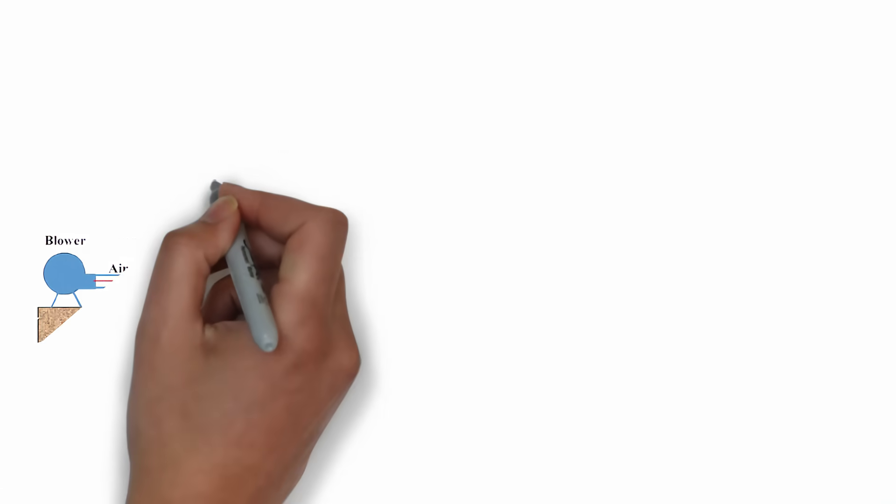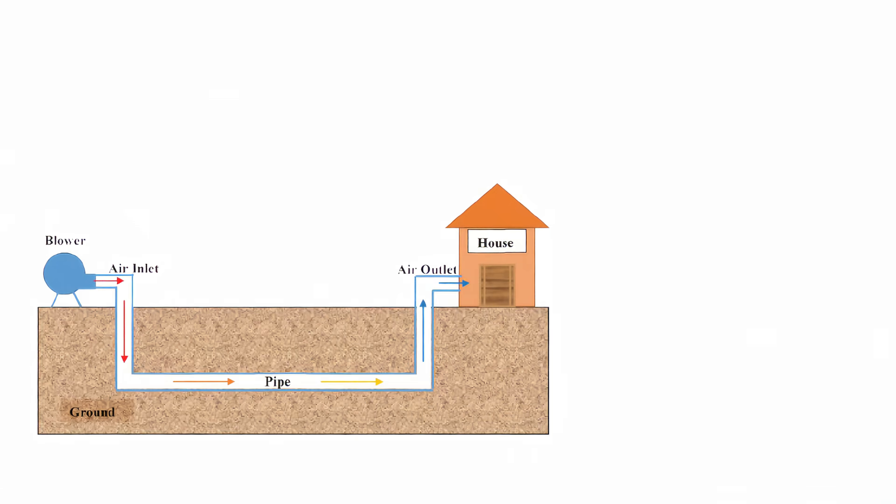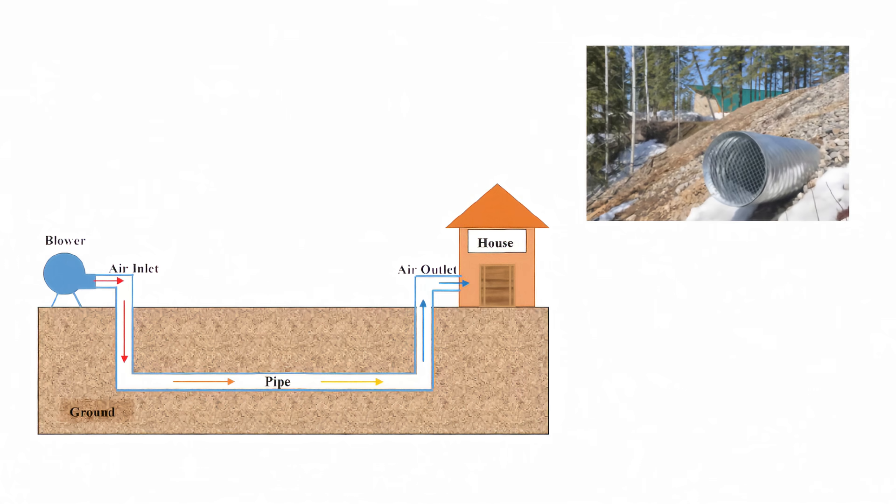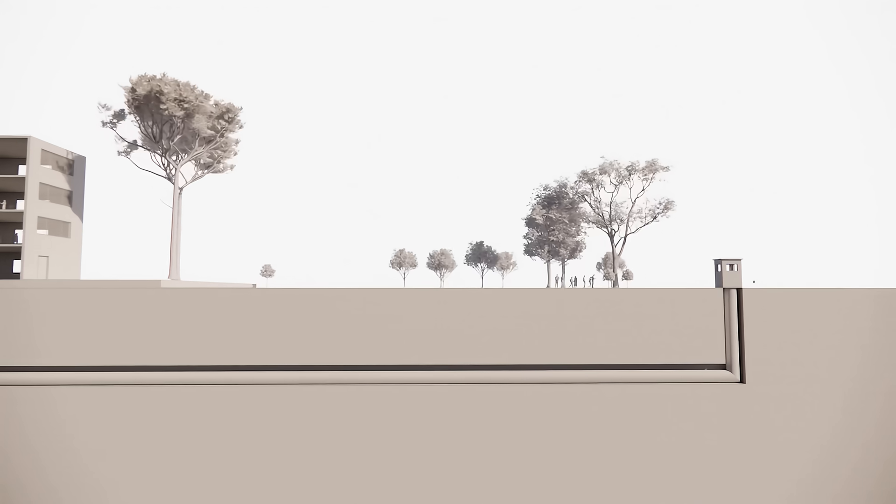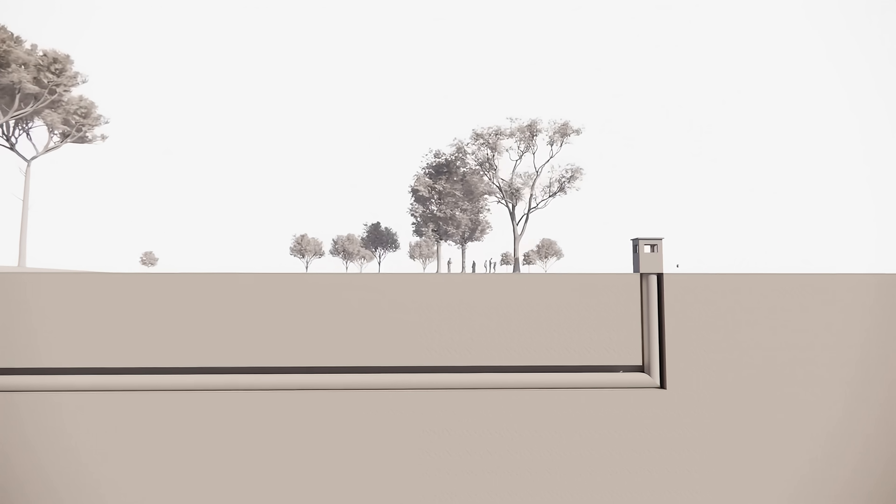This is where fresh outdoor air enters the system. The intake is usually covered with a mesh filter to keep out dust, insects, and debris. Air is drawn into the system using a fan or natural convection.